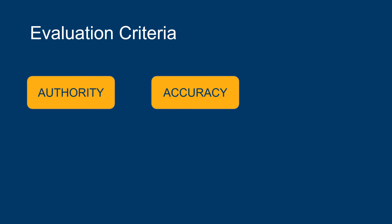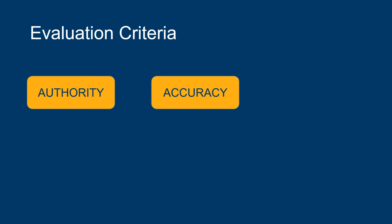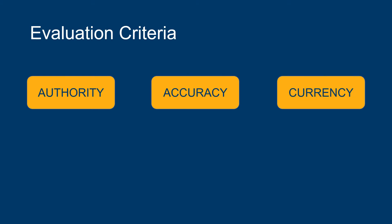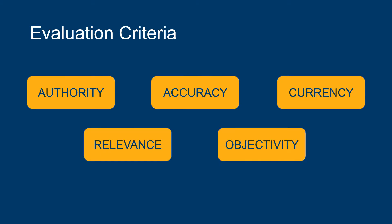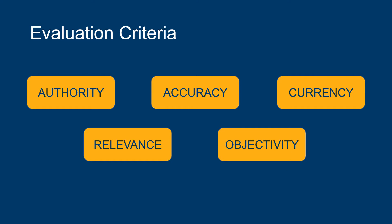Authority, Accuracy, Currency, Relevance, and Objectivity. Evaluating your sources will help you determine if you have the information you need for your research, or if you need to find additional, more appropriate sources.